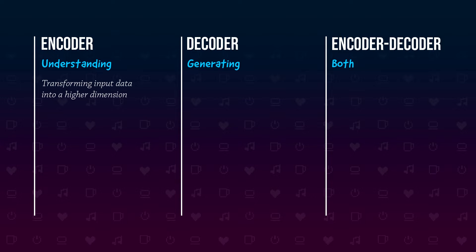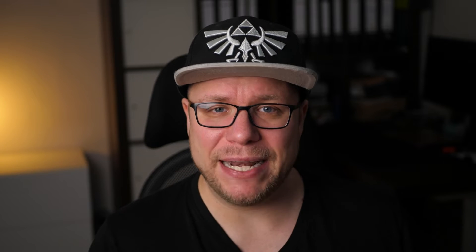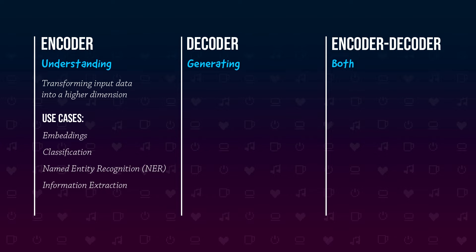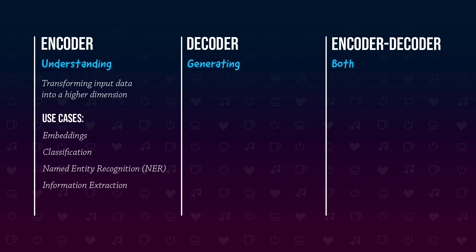More technically, an encoder takes the input and transforms it into a higher dimension — a more abstract representation of the context — which is then outputted in the form of a vectorized embedding. Typical use cases for an encoder are generating those embeddings, classifying text into categories such as negative or positive, named entity recognition (NER) to find names, locations, items, etc. in a text, and information extraction — a special case of NER where you can also tell the model what you're looking for.